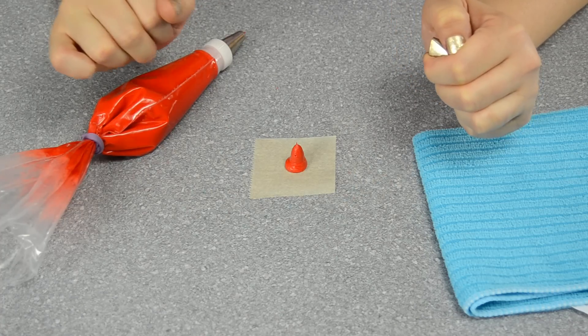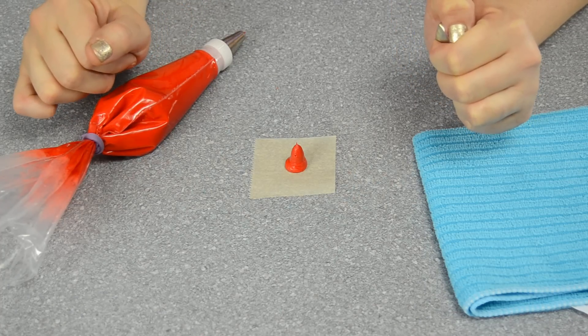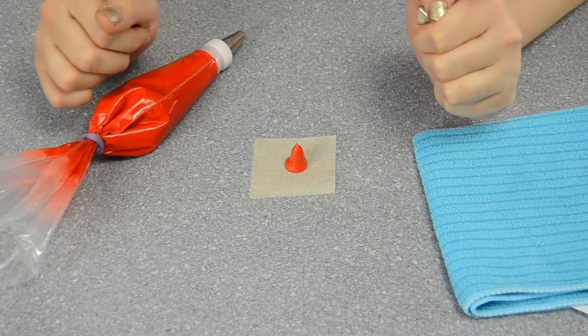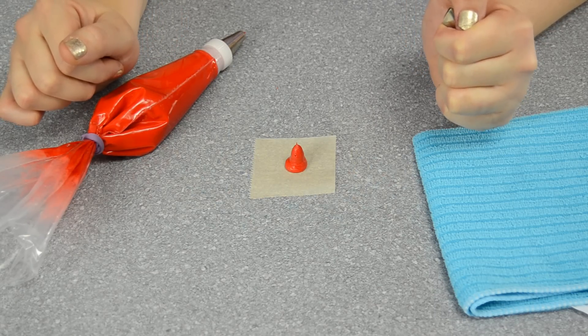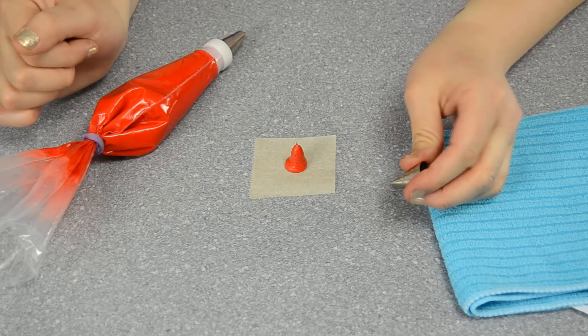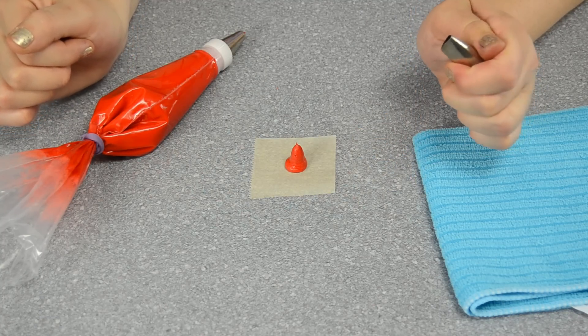So these will have to dry. You'll need about an hour or two hours for the royal icing to completely dry. I find lots of success just leaving things overnight and doing them the next day. So I've got some dry ones I can substitute in. I'm going to change my tip to the 104 and I'll be back to show you how to make the ribbon.